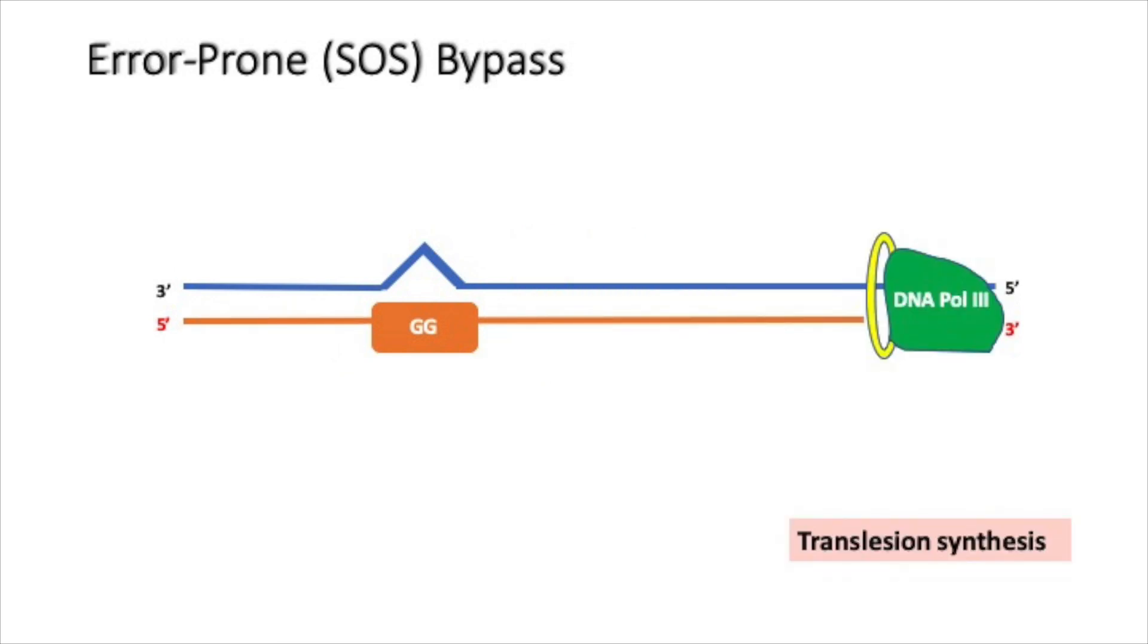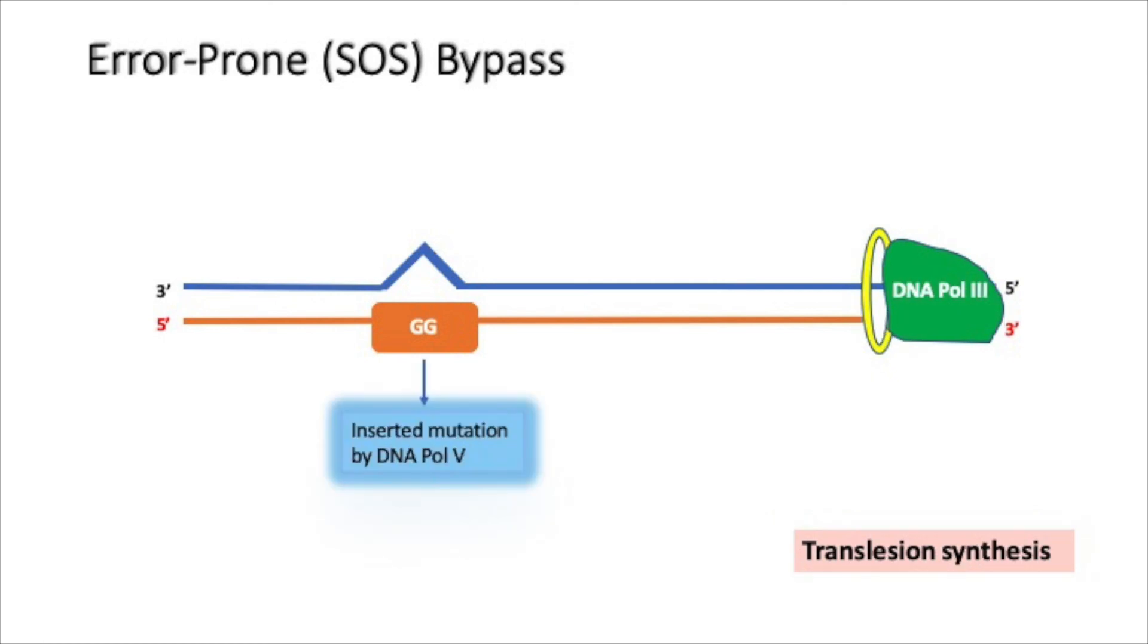DNA polymerase 3 completes the replication process. Mutations in the region complementary to the damaged region of DNA are introduced by the error-prone bypass.